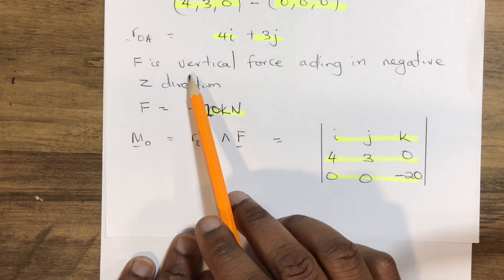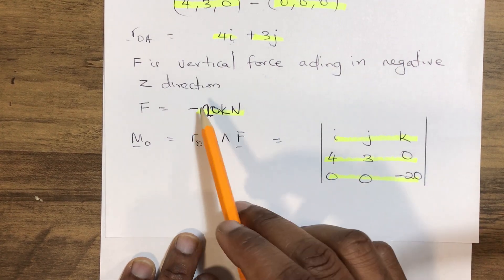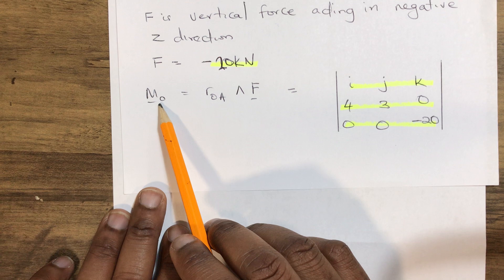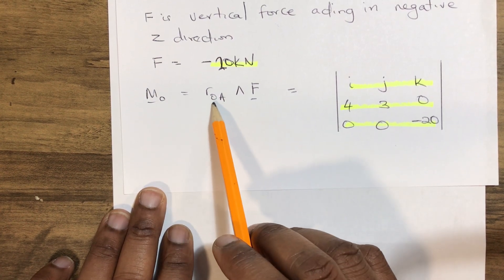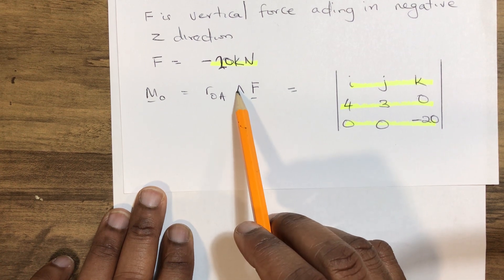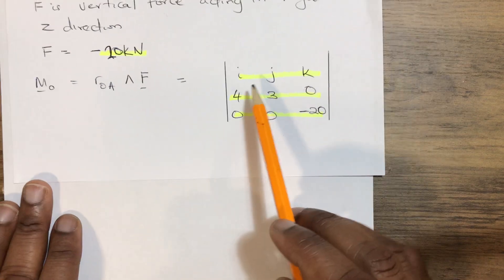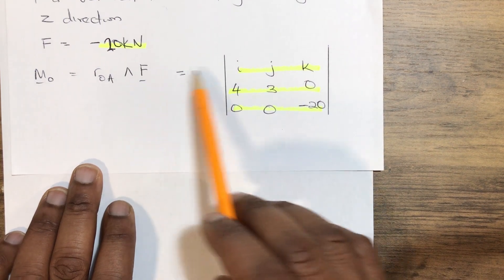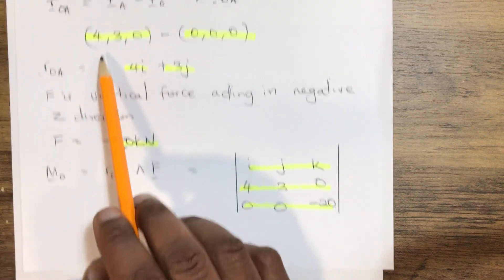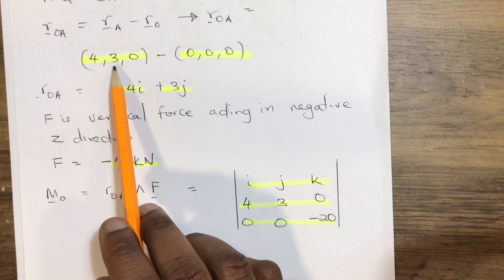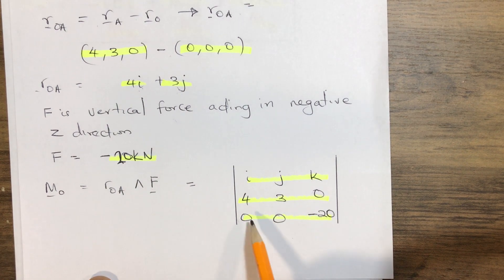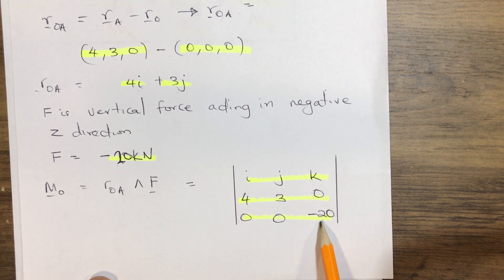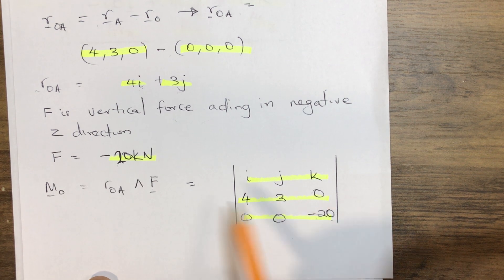Knowing that F is a vertical force acting negatively downward in the Z direction, we set up our matrix for the moment M = r_OA × F. This gives us an I, J, K matrix. The first row is I, J, K; the second row is our position vector entries 4, 3, 0; and the last row is our force components 0, 0, −20, since the force acts downward.